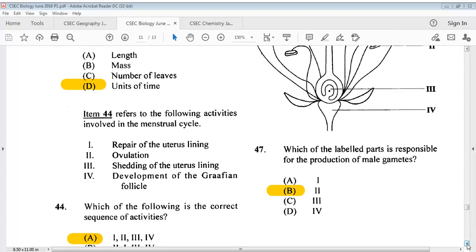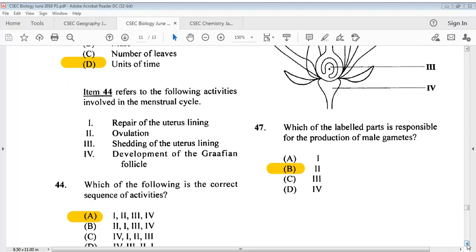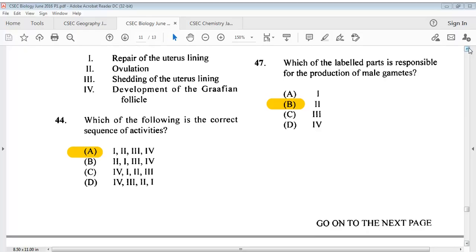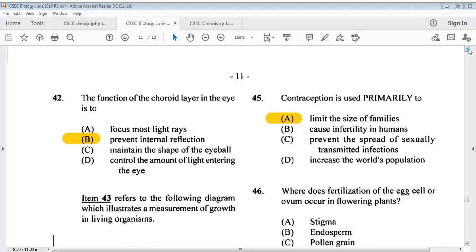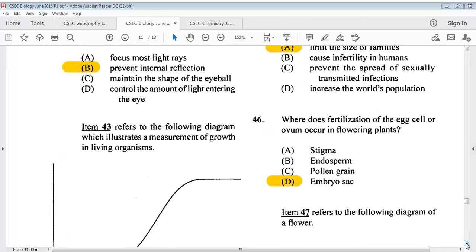Question 44 refers to the following activities involved in the menstrual cycle. There you have your four options. Question 44 says which of the following is the correct sequence of activities? The answer is A, all of them. Question 45, contraception is used primarily to A, limit the size of families. Question 46, where does fertilization of the egg cell or ovum occur in flowering plants? The answer is D, embryo sac.